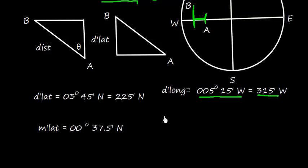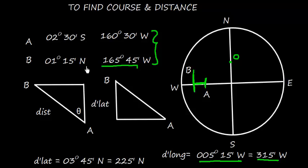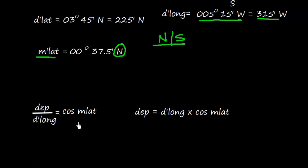Now let's find mean latitude. When the latitudes are in different hemispheres — one in the northern hemisphere and one in the southern hemisphere — mean lat is the difference of the two divided by two, named after the larger one. Here the southern latitude is larger than the northern latitude, so the mean latitude will be in the southern hemisphere.